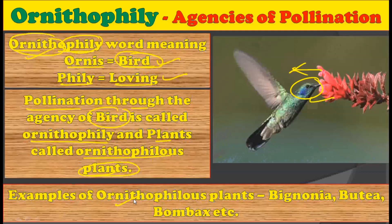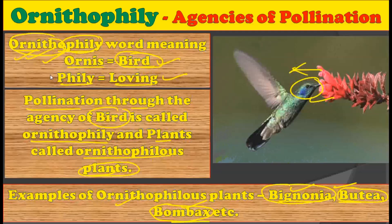Examples of ornithophilous plants are Bignonia, Butea, and Bombax. You should carefully remember these examples because while writing the concept of ornithophily, you must be able to give examples — it is very important. Without the example, your answer will not be complete. All these plants show the ornithophily phenomenon in which birds pollinate the flowers.